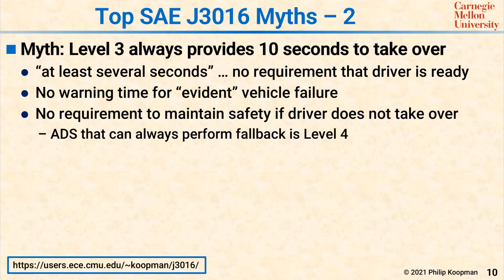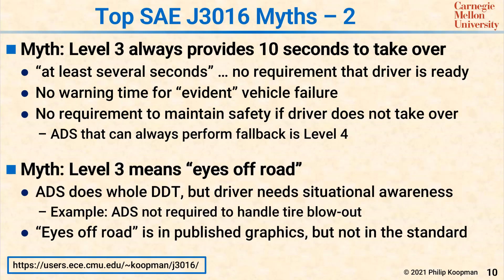There's also no requirement to maintain safety if the driver does not take over. If you have a system that says it wants you to take over but will still guarantee to bring you to a safe stop if you don't, that is not a Level 3 system — that's actually a Level 4 system by J3016 definition. Another myth is that Level 3 means eyes off-road. Eyes off-road for Level 3 was commonly stated for a while, but the standard does not say that anywhere. Moreover, even though the ADS at Level 3 does the whole dynamic driving task, the driver still needs situational awareness to handle vehicle failures. You would not want to be a driver engrossed in a movie who then has to instantly take control, maneuver in traffic, and respond if a tire blows out with only the thump of the blowout as warning.